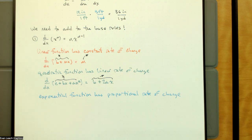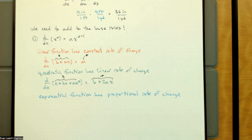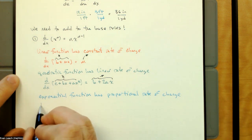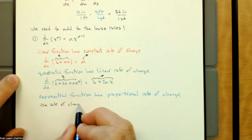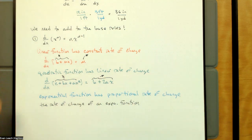We're going to write down what this means in terms of a derivative, because right now we don't know the derivative of an exponential function. This is not going to entirely reveal the derivative of an exponential function, but it's going to give us an idea and connect our rule for derivatives of an exponential function with this concept. The rate of change of an exponential function is proportional to the value of the function.